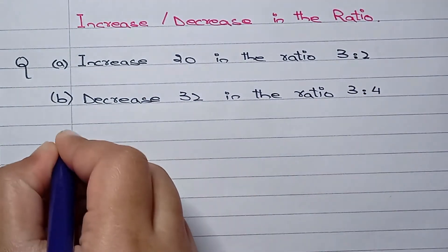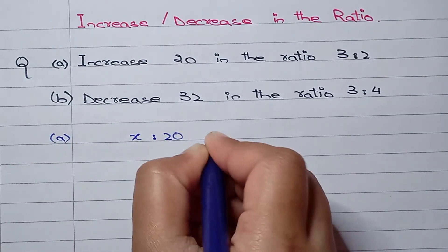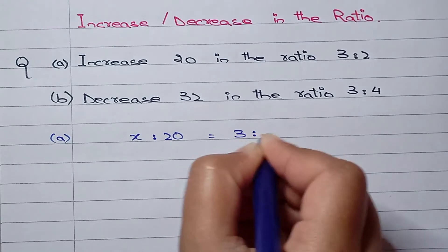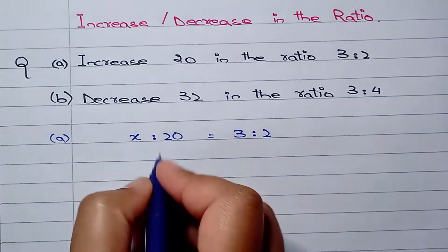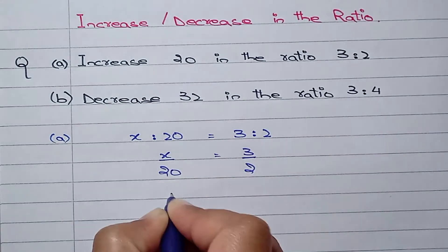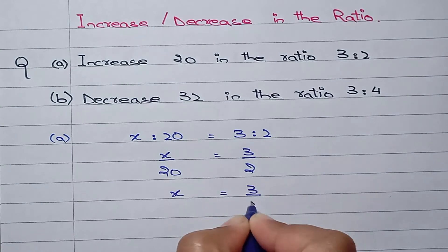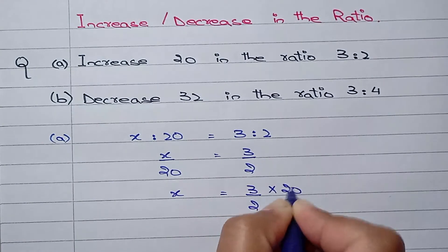So we can say for the answer for part a, x:20 equals 3:2. So we can say x/20 equals 3/2, and to solve for x we need to multiply the 20 on the other side, that is 3/2 times 20.